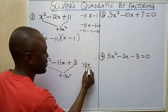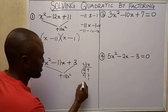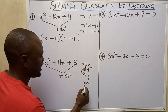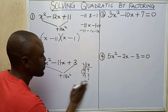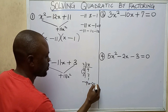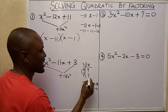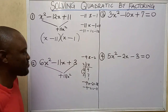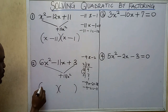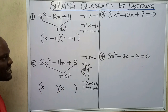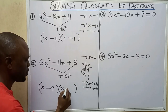Let me find the prime factors of 18 quickly: 2 and 9, then 3 and 3. The combination I'll use is 9 and 2, because 9 times 2 gives me 18 and 9 plus 2 gives me 11. But I need minus 11, so I'll work on the sign: minus 9 times minus 2 gives me 18, and minus 9 minus 2 gives me minus 11. So my factors are minus 9 and minus 2. I'll open up two parentheses with x in each.